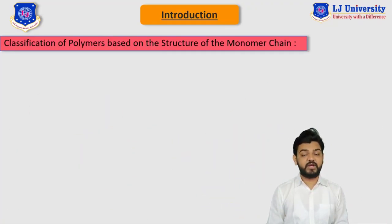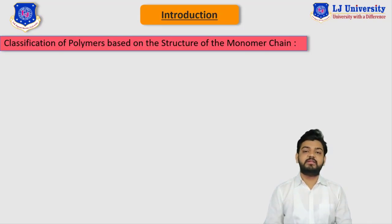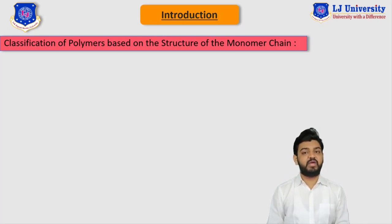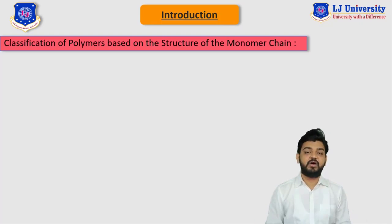In the previous video, we defined polymer in a proper way and we saw the classification of polymer based on their availability of sources as natural polymer and synthetic polymer. Then we saw the classification based on the structure of monomeric chain as linear polymer. If you missed that video, you can find it via the eye button on the top of the screen. Now, in this video, we are going to continue our classification of polymer based on the monomeric chain.